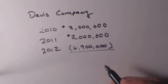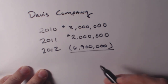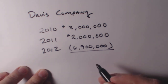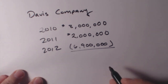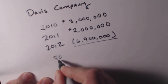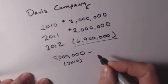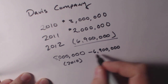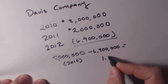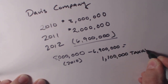The question we're asking is: in 2012, can this loss be carried back? The answer is yes. If so, how much would we be paying in taxes in the year 2010? It's a very simple calculation. We're going to take our $8 million profit from 2010 and subtract the loss of $6,900,000. This will equal $1.1 million in taxable income.